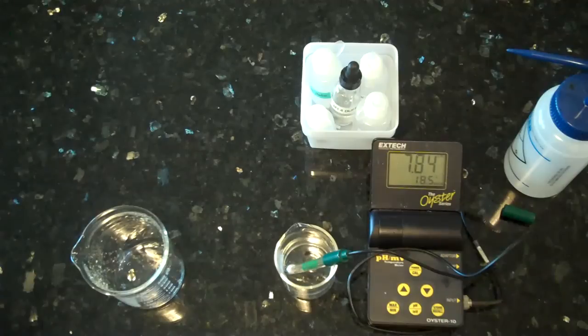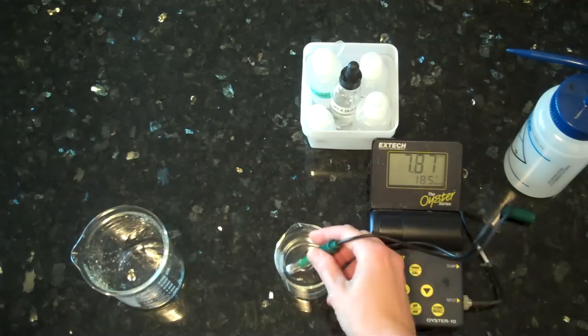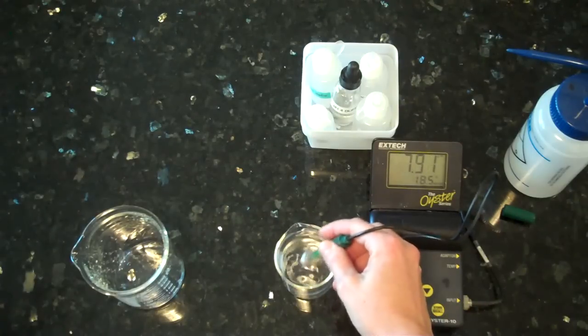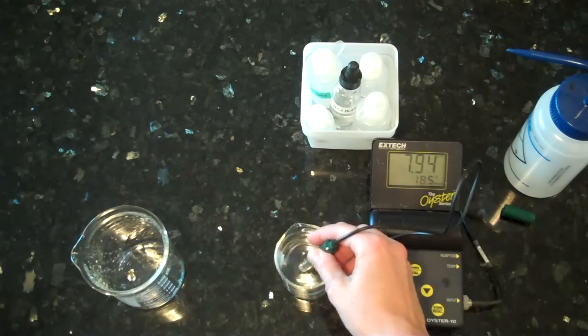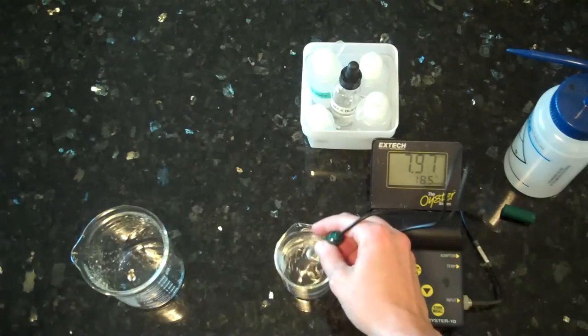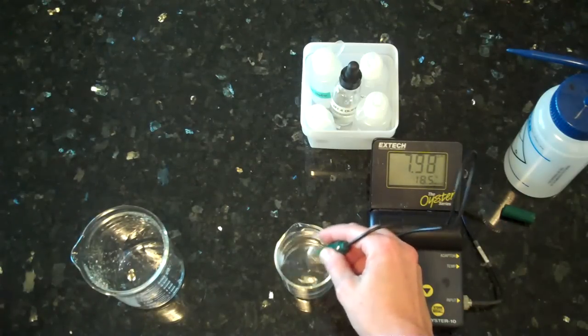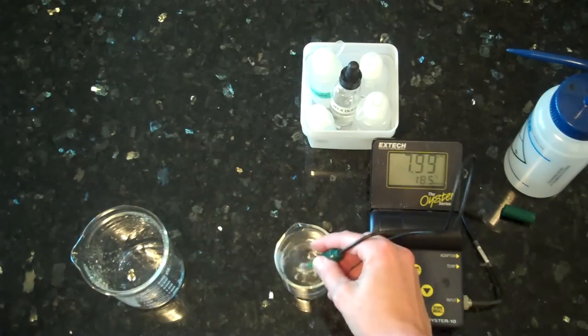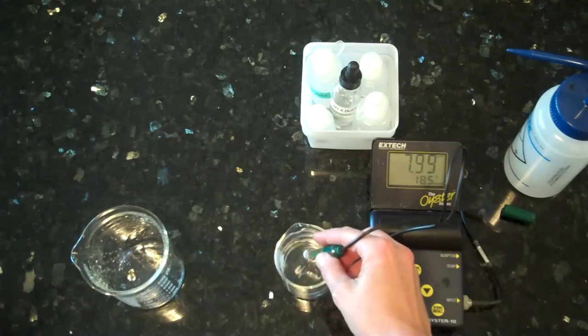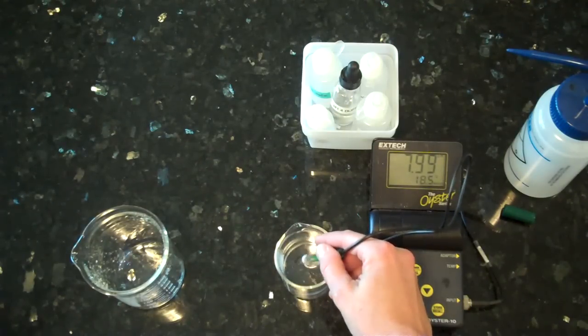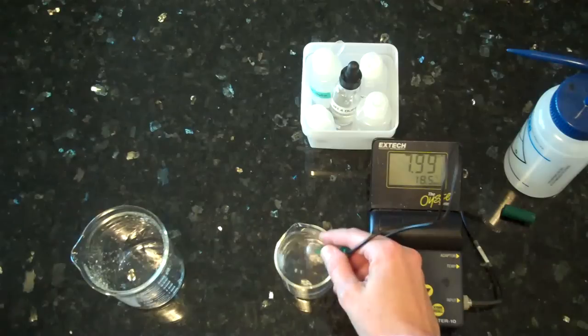Sometimes it takes a little while for the pH to settle. Jiggling it back and forth can accelerate this. Note that I am not stirring. Never stir a solution with the probe, because that can result in breaking the bulb. If you need to stir a solution, please use a stirring rod.